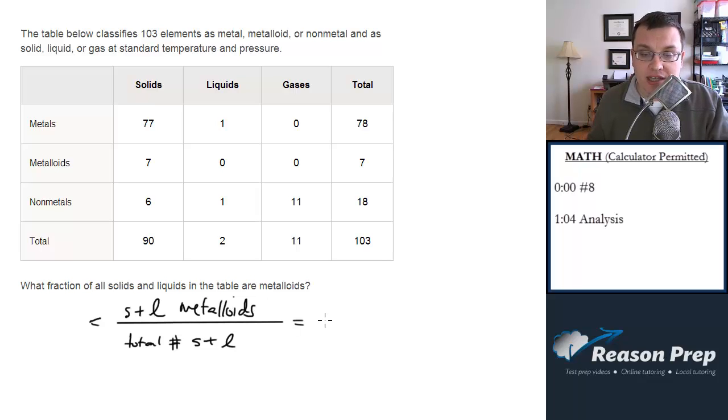So let's do the bottom first. How many of these are solids and liquids? Don't say 103 because that includes gases. We just need these two columns here, solids and liquids. That gives us 92.